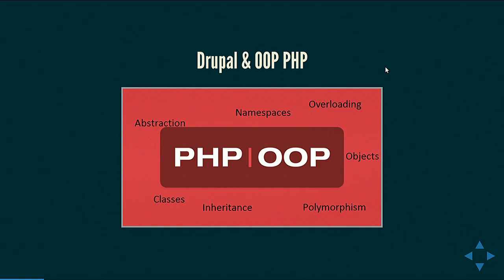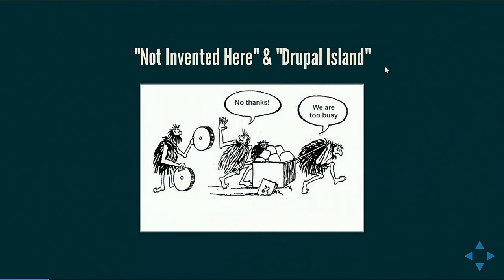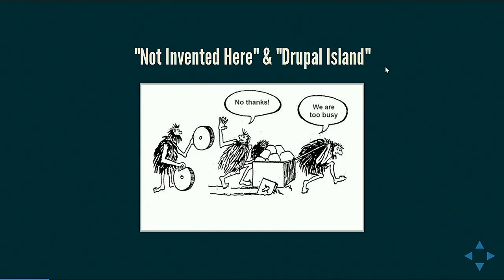Also, in the software world and especially in open source, when solving a problem we look for existing solutions so that we don't have to reinvent the wheel. But that was not something Drupal was doing. Drupal 7 solves a lot of problems that Symfony also solves, but in much better ways. Drupal 7 was not able to use those because it was not object-oriented whereas Symfony was. Because of being written in an entirely different programming paradigm, it was difficult for Drupal to inherit those things. Drupal was blamed for a philosophy of 'not invented here' — a resistance to using existing solutions — and was said to be living on its own island, away from the PHP mainland.